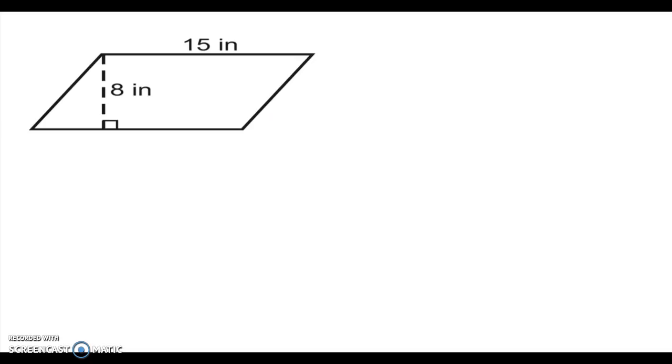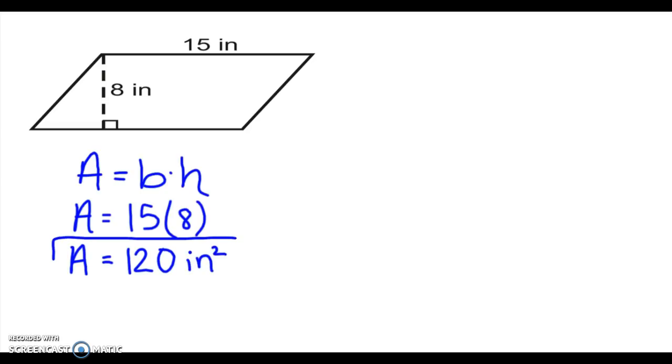Alright, next we're going to get into a couple parallelogram ones. Kind of bear with me here for this first one. Remember, I always write down the formula first. Even if it seems silly, still write it down. So we have area equals base times height. My base is 15 and my height is 8. So if I multiply 15 times 8, I get 120. And then inches squared for your final answer.